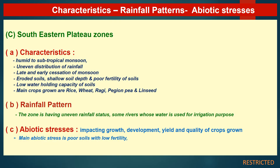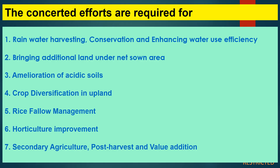The South-Eastern Plateau zone characteristics include humid to subtropical monsoon, uneven distribution of rainfall, late and early cessation of monsoon, eroded soils, shallow soil depth and poor fertility, and low water holding capacity of soils. Main crops grown are rice, wheat, ragi, pigeon pea, and linseed. The rainfall pattern has uneven distribution, and some rivers are used for irrigation. The main abiotic stress is poor soils with low fertility.